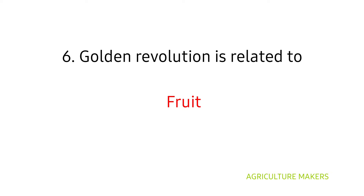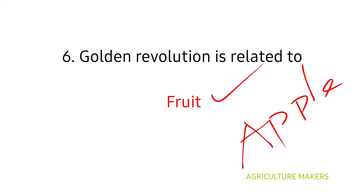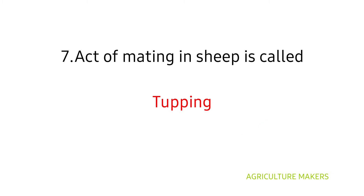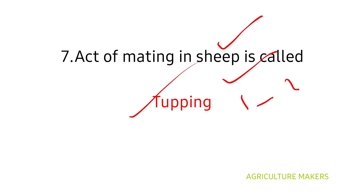Golden revolution is related to fruits, and it may sometimes also be referred to as apple — select the option that best fits the question. The act of mating in sheep is called tupping. Read the question carefully whether it is asked for sheep, goat, or anything else. This is one of the important animal husbandry questions; a table column is provided for these things, so read it carefully.